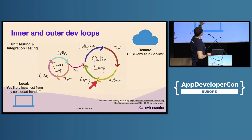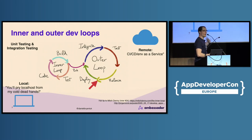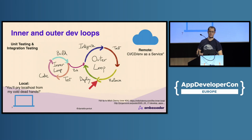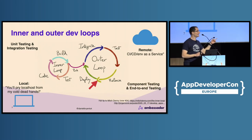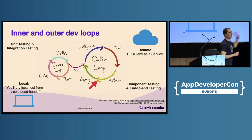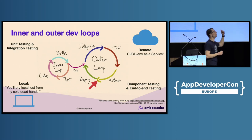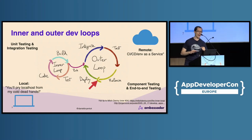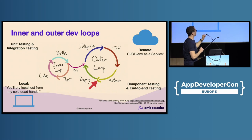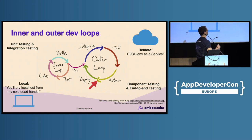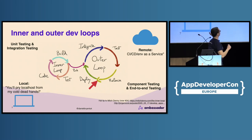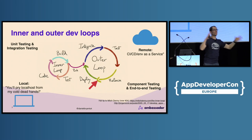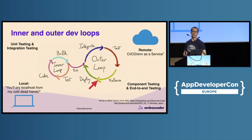Unit testing is primarily in the inner loop. Integration testing — primarily in the inner loop, knitting things together. Component testing and end-to-end testing are more in the outer loop, but sometimes you need to do them in the inner loop too. If you're doing a lot of component testing locally, or you want to push a lot of stuff to remote to test it, those are warning signs I'll talk about more in a moment.